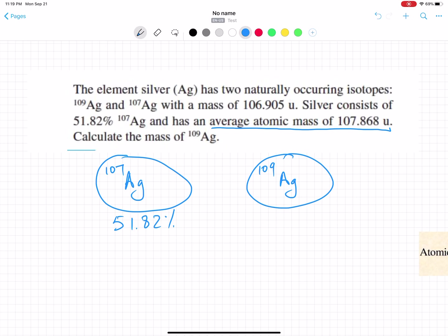They give the percentage of Ag-107 as 51.82%, and they're asking you what will be the mass of Ag-109. They also give the mass of Ag-107 as 106.905, but that's not precise - they want you to be more precise on the Ag-109 number.